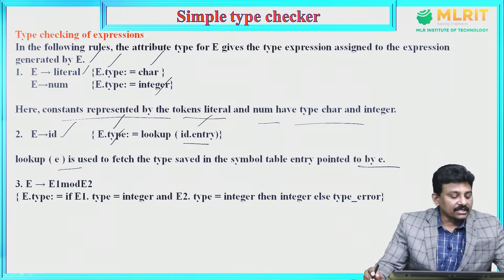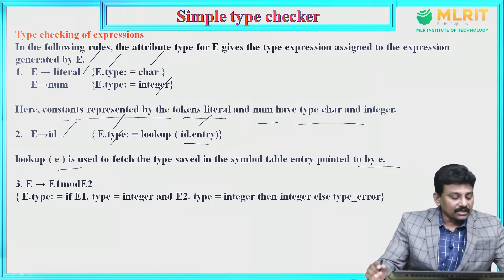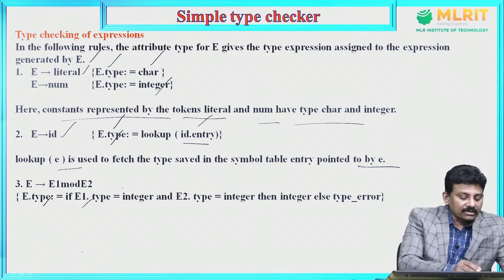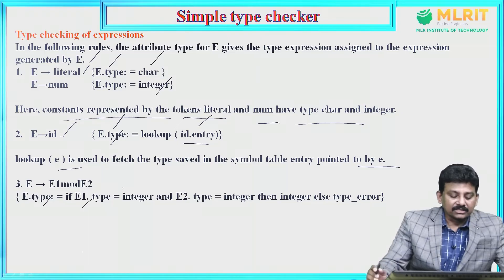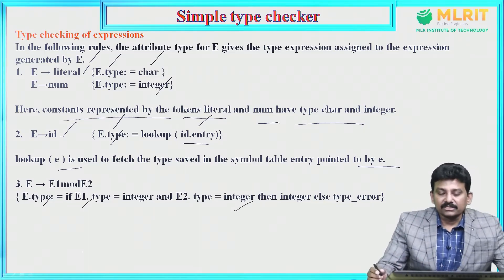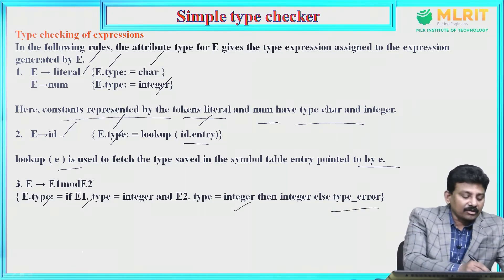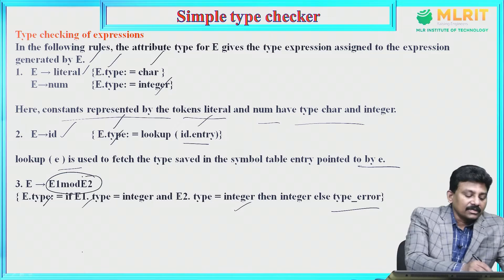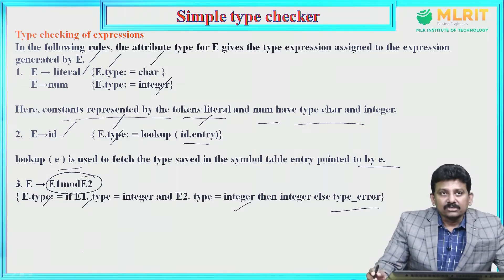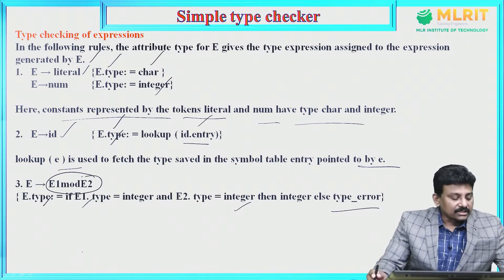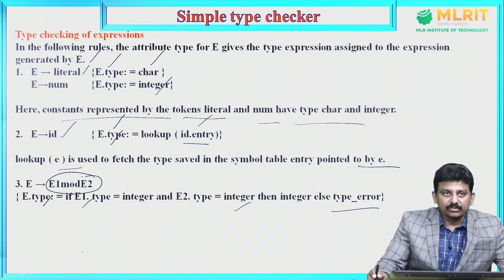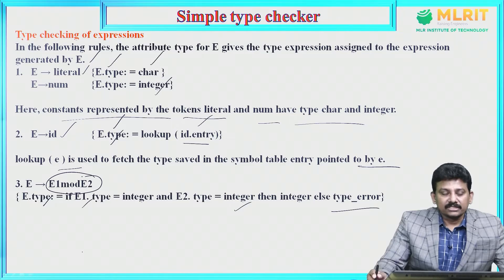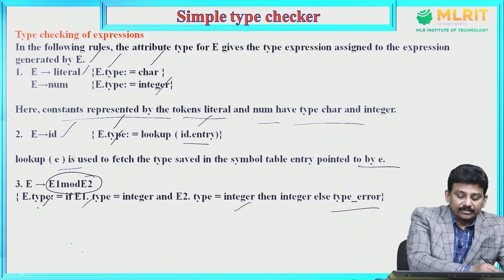Then, E derives E1 mod E2. E.type = if E1.type is integer and E2.type is integer, then integer, else type_error. For mod operation, both operands must be of type integer. So E.type returns integer if both E1.type and E2.type are integer; otherwise type_error.